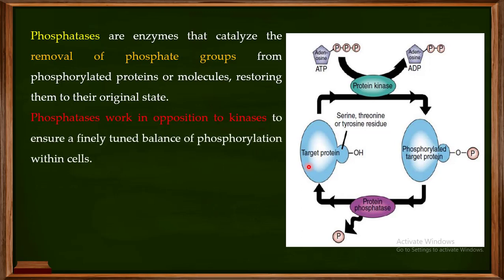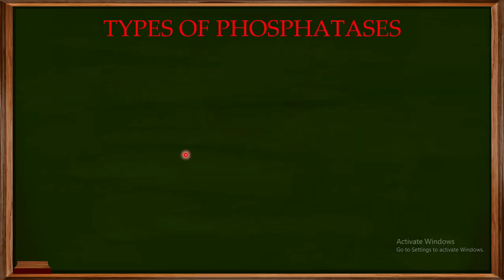Phosphatases work in opposition to kinases to ensure a finely tuned balance of phosphorylation within the cell. When you need phosphorylation on a target protein, it performs its function. When that activity is no longer needed, the phosphatases come, remove the phosphate group from the target protein, and convert it back to its original state.